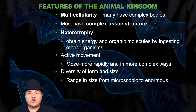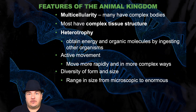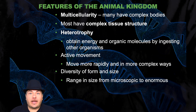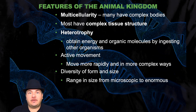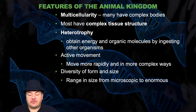So what are the features of animals? They're multicellular — not unicellular. They have complex tissue structures. They're heterotrophs, which means they obtain their energy and organic materials by ingesting other organisms. They have active movement, so they move rapidly and in more complex ways. And they have a diversity of forms and sizes, from microscopic to enormous organisms.